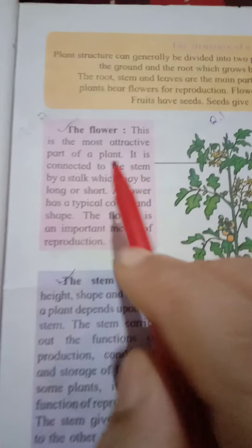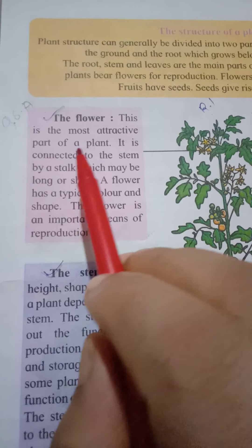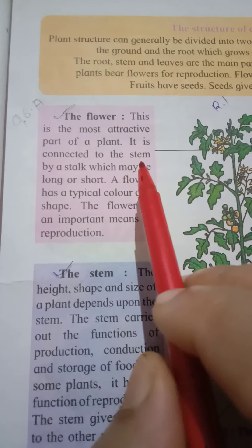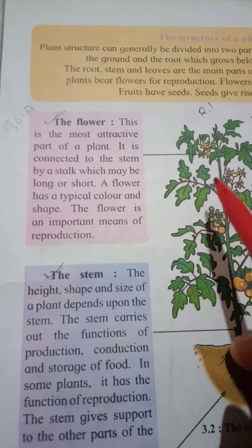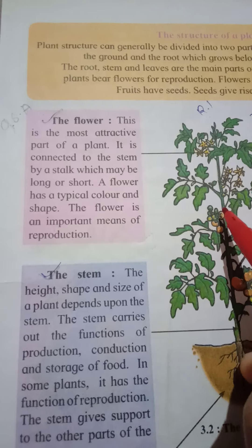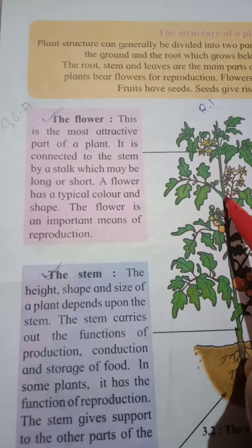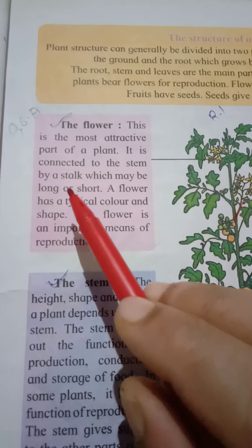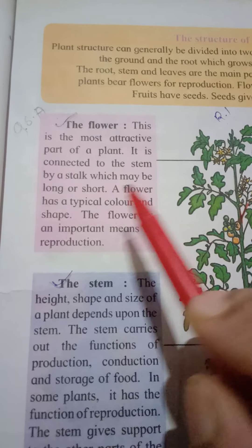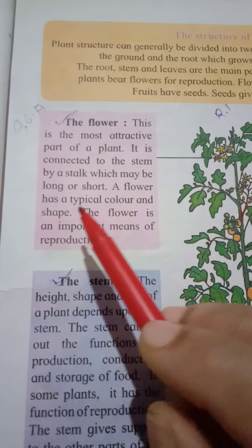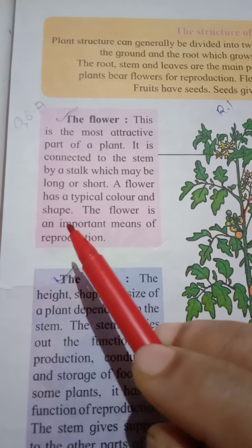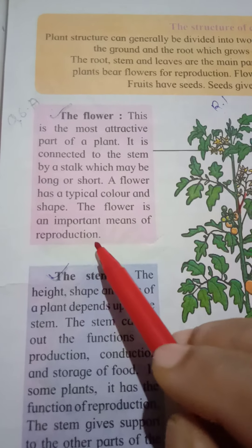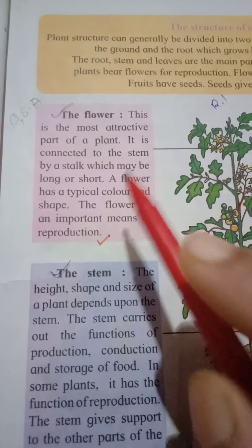Next, the flower. This is the most attractive part of the plant. It is connected to the stem by a stalk, which may be long or short. A flower has a typical color and shape. The flower is an important means of reproduction in plants.